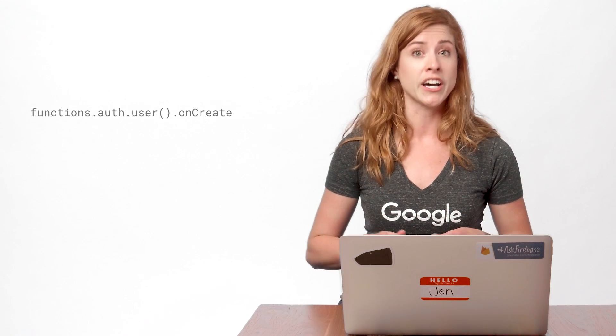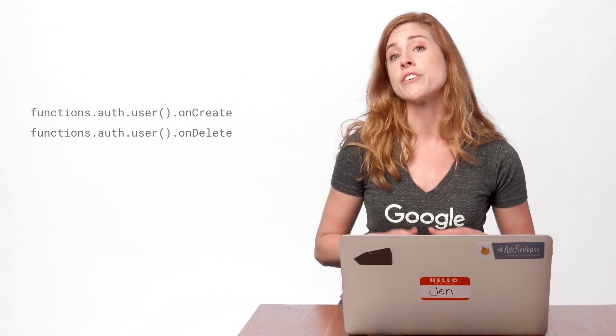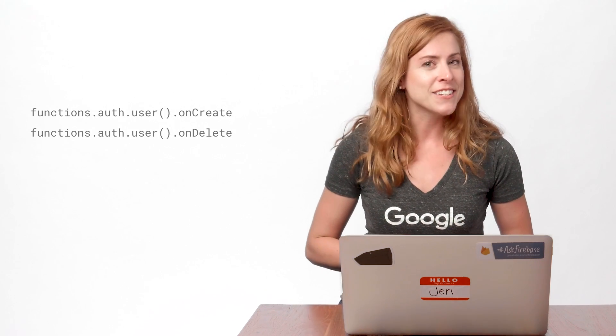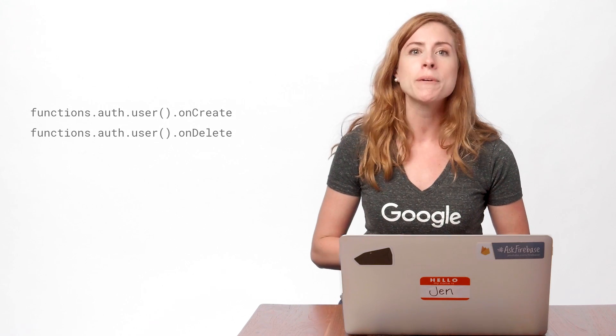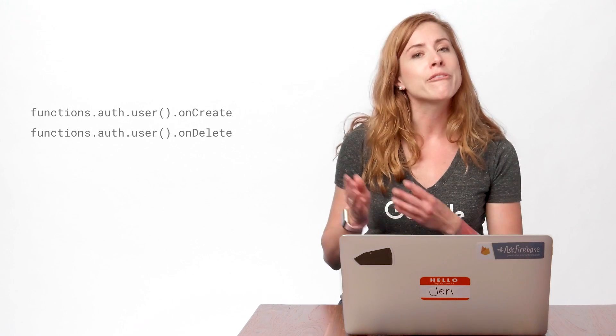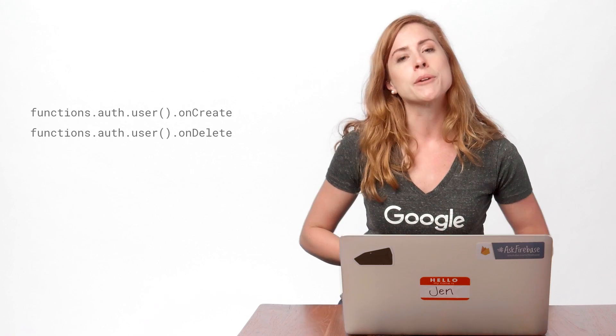I'll write a function that's triggered on creation of a new user and then use the Admin SDK to populate the user's profile in the database. I'll also create a function that's triggered on deletion of a user, which marks a user's profile as deleted. I do this using two functions provided as part of the Cloud Functions library: functions.auth.user.oncreate and functions.auth.user.ondelete. As the name suggests, oncreate is triggered when a user is created, which can happen in the client upon creating a new account, adding from the Firebase console, or importing from the command line.